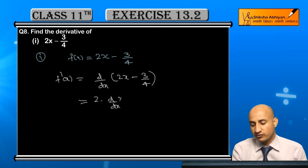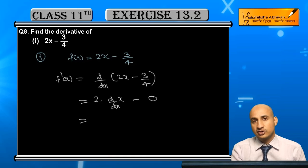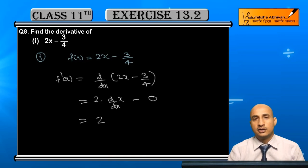It will come as d/dx of x minus d/dx of 3 by 4, which will be 0. And d/dx of x is 1, because the derivative of x is 1. So the answer is 2. Now see the next part.